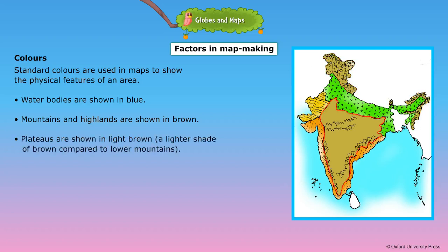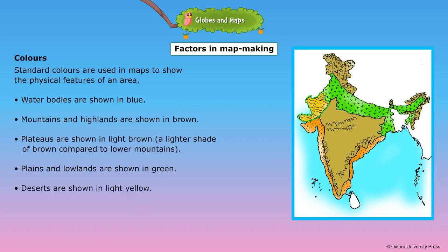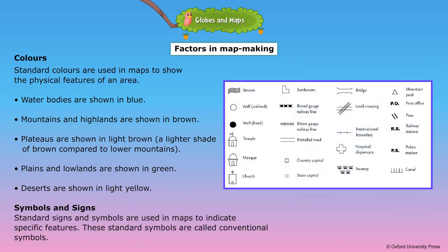High mountains in dark brown and lower mountains in light brown. Plateaus are shown in light brown, a lighter shade of brown compared to lower mountains. Plains and lowlands are shown in green. Deserts are shown in light yellow. Standard signs and symbols are used in maps to indicate specific features. These standard symbols are called conventional symbols.